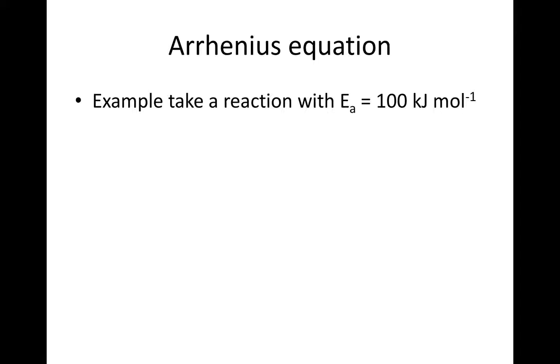For example, take a reaction with Ea equal to about 100 kJ per mole. At 300K, e to the minus E over RT is equal to e to the minus 100,000 over 8.314 times 300, which is equal to 4.25 times 10 to the minus 18.